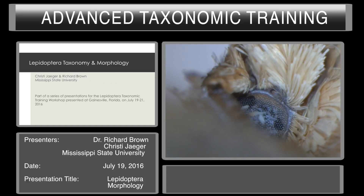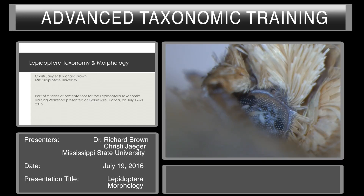So this moth has an ocellus. Just posterior or behind the ocellus are the chaetosemata. The chaetosemata are these specialized hairs — very short hairs that stick out at angles right behind the ocellus. This is an innervated structure; it has a nerve going to it, it's an organ, and its function is unknown. The chaetosemata has no function even though it's innervated. It's present throughout most of the Lepidoptera, but it is absent in the Noctuoidea.